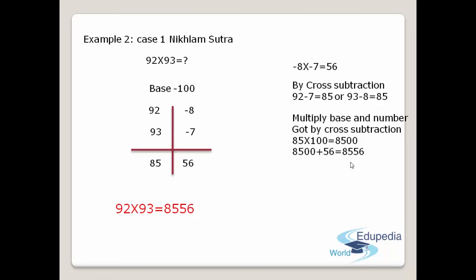You have understood pretty well: when you get two-digit numbers that are very near to 100, take the base as 100 and follow Case Number One. Case Number One tells you that when the numbers to be multiplied are less than the base, take the deviation with a minus sign, multiply those two numbers to get 56, then do cross subtraction — 93 minus 8, or 92 minus 7 — you get the same answer, 85. Club both and write it as the answer.